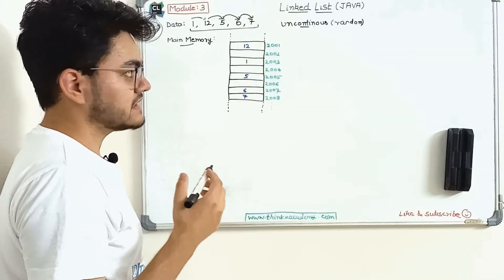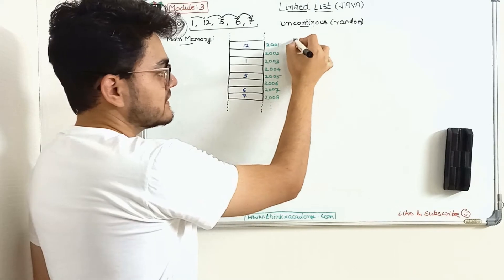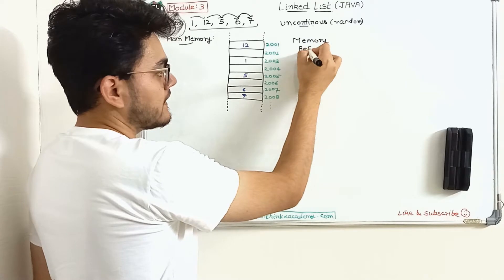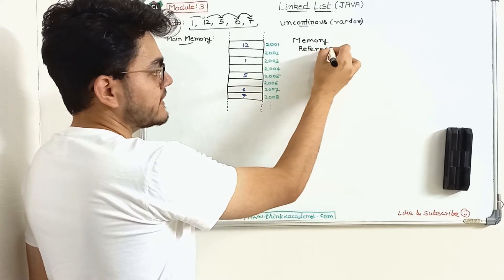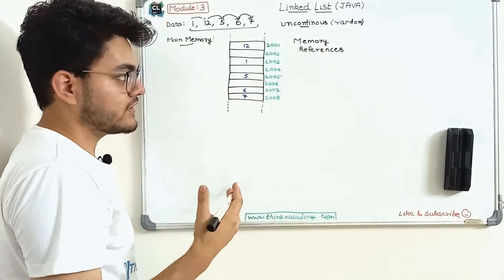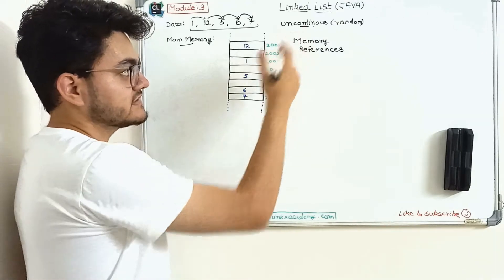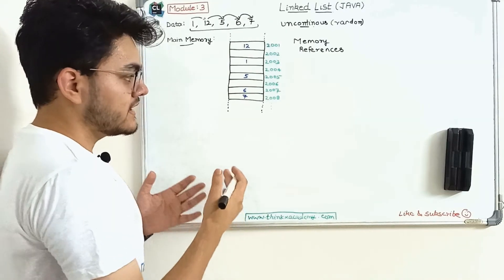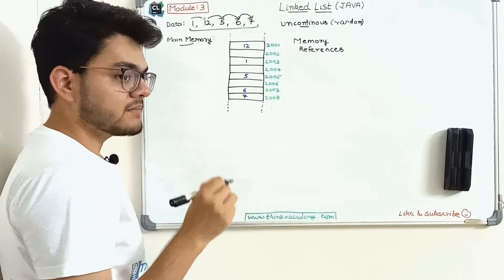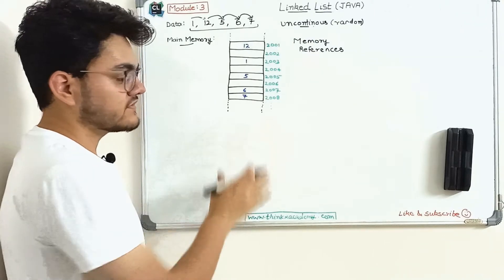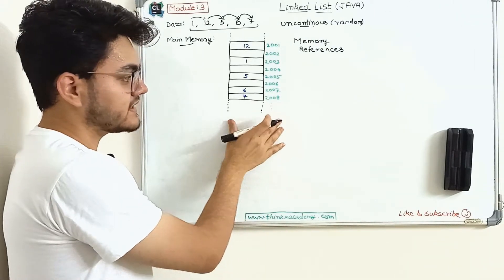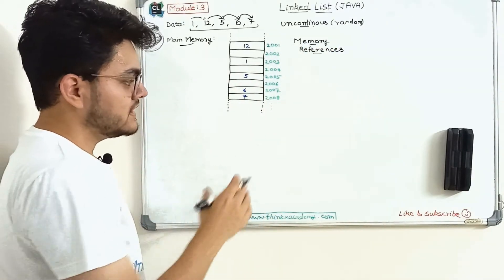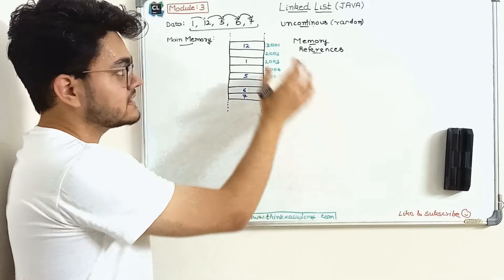Since elements are stored at random locations, there must be some way to access them in order. After one we want twelve, then five, then six, then seven. That is done using memory references. We are going to create memory references to make pointers — to point to the next location we want in our data structure, which is a linked list. Let's draw a linear architecture of linked list.